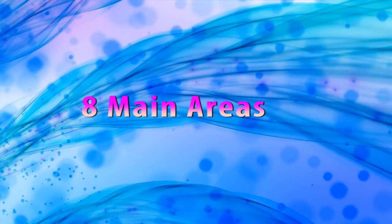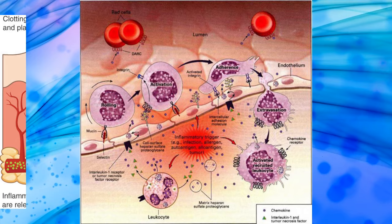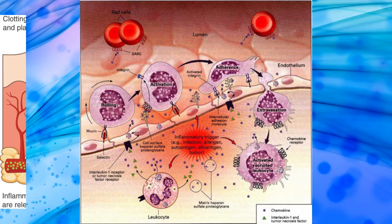Currently, pathology can be divided into eight main areas depending on the types of methods used or the types of diseases examined. The first is general pathology, which describes a complex and broad field that involves the study of the mechanisms behind cell and tissue injury.